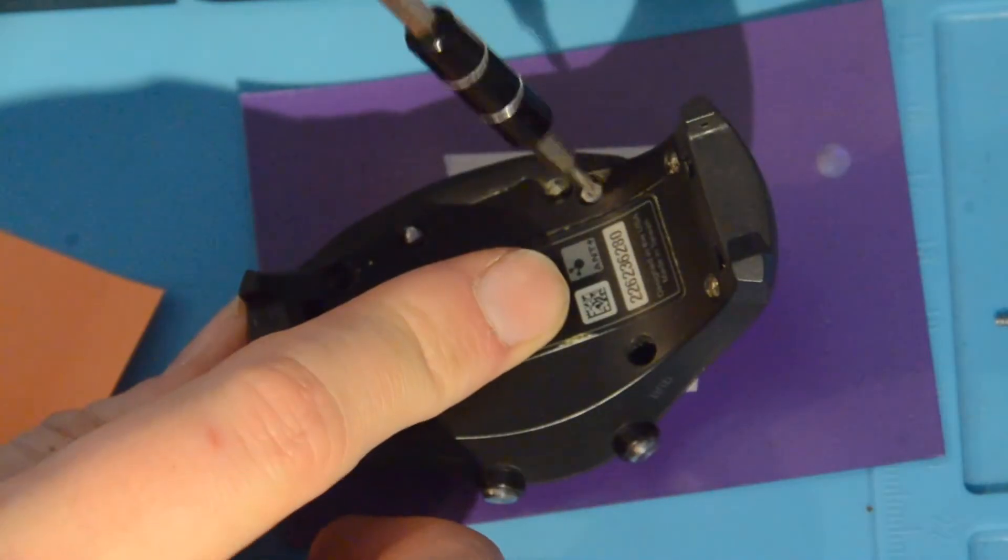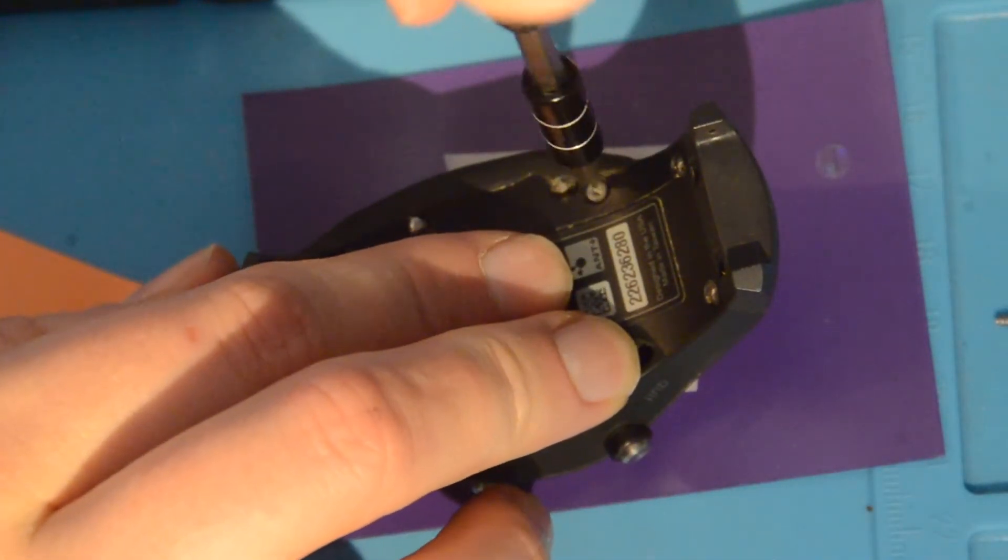The six tiny screws are all T5. Points to Garmin for that, this is the same as it was on the Forerunner 10.